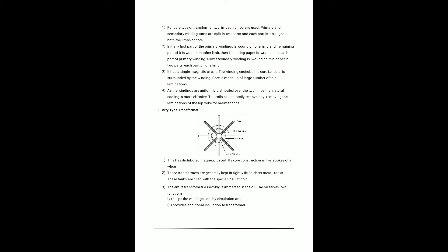The berry type transformer has a core with HV windings, insulation, and LV windings. It has a distributed magnetic circuit with a core construction like the spokes of a wheel. These transformers are kept in a tight-fitted metal tank filled with special insulating oil. The entire transformer assembly is immersed in oil, which serves two functions: keeping the winding cool by circulation and providing additional insulation.